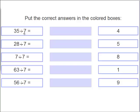35 divided by 7 equals what? 4, 5, 8, 1, or 9? Yes, it is 5. 28 divided by 7. 28 divided by 7 equals what? 4. 28 divided by 7 equals 4.